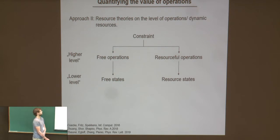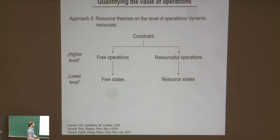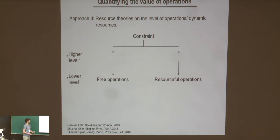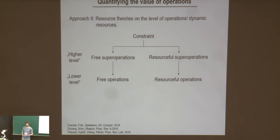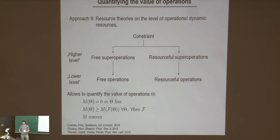The second approach, on which I will focus, is to build resource theories directly on the level of operations. Here again we have to model how resource theories on the level of states work. If we want to quantify operations, technically we put the operations in the lower level and introduce super-operations at the upper level. If we assume these exist and are meaningful, we can continue exactly as we did for the case of states: we come up with functionals mapping operations to non-negative real numbers, and we can ask meaningful axioms — they should be faithful, monotonic, and for the remainder of this talk I will demand the additional condition that they are convex.